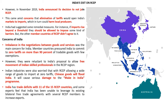If India signs the RCEP deal, Chinese products would flood into the Indian economy, affecting local producers and creating problems for the Make in India initiative and Atmanirbhar Bharat. A major concern is that elimination of tariffs would open India's market to imports, which in turn could harm local producers. Elimination of tariffs on exports and imports would obviously affect the Indian economy and domestic producers.